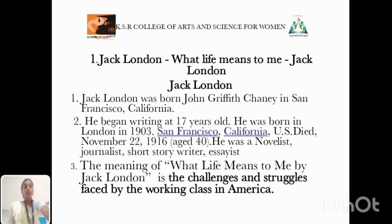First, we are going to discuss about the author. Jack London was born John Griffith Jani in San Francisco, California. He began writing at 17 years old. He was born in 1876 in San Francisco, California, and he died in the U.S. on November 22, 1916, at the age of 40. He was a wonderful novelist, journalist, short story writer, and essayist. The meaning of What Life Means to Me by Jack London is the challenges and struggles faced by the working classes in America.